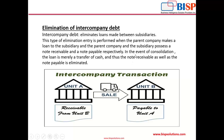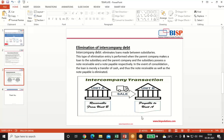Intercompany debt eliminates the loan made between subsidiaries. For example, suppose there is Unit A and Unit B — Unit A has sold some goods to Unit B. For Unit A it's a receivable from Unit B, and Unit B will book it as a payable to Unit A, so the receivable and payable will get eliminated while preparing the consolidated financial statement. This elimination is performed when a parent company makes a loan to a subsidiary, and the parent holds a note receivable while the subsidiary holds a note payable. In consolidation, the loan is merely a transfer of cash, so both the note receivable and note payable get eliminated.